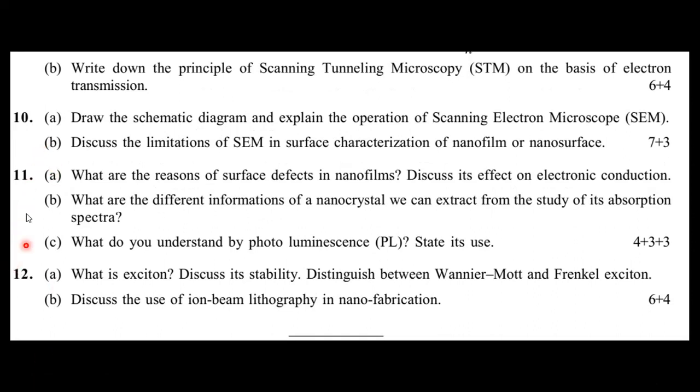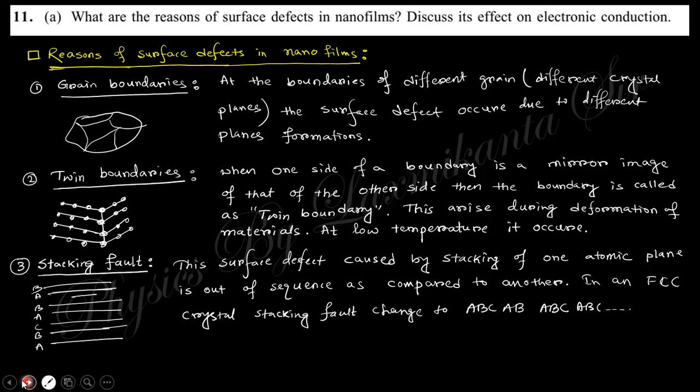This is the last part where we want to discuss question number 11 and 12. The previous lectures have already been discussed if you want to go through the description box first. Question 11 asks: what are the reasons of surface defects in nanofilms? That means when nanofilms are generated by different processes, chemical or physical deposition, surface defects arise.